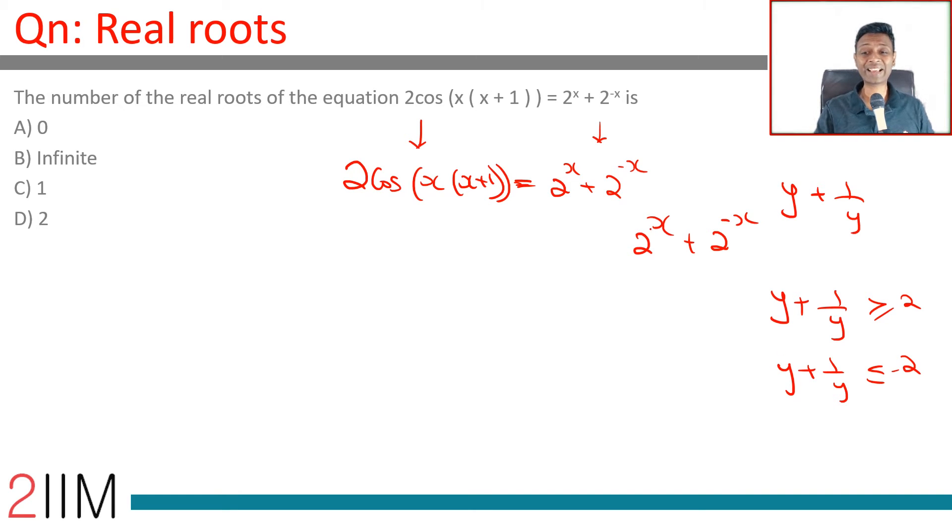Here, 2 power x cannot be negative. So, this part we don't have to worry about. So, we can say 2 power x plus 2 power minus x is greater than or equal to 2. Wonderful.